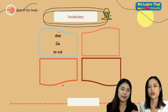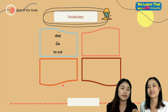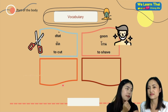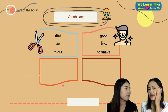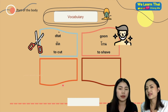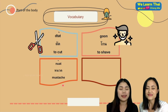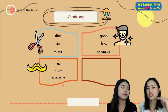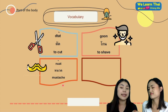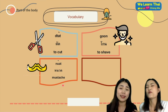Moving on to more vocabulary. The word ตัด means to cut. The next one is โกน, which means to shave. So if I say 'I shave my hair,' that is ฉันโกนผม. If I say 'I cut my hair,' that is ฉันตัดผม. The next word is หนวด, meaning mustache. So 'I shave my mustache' is ฉันโกนหนวด or ผมโกนหนวด.